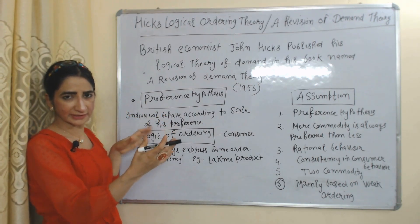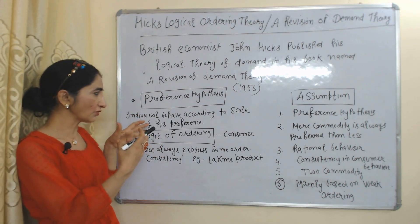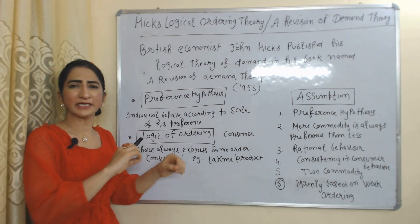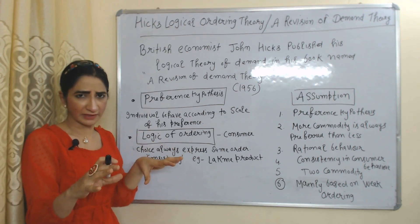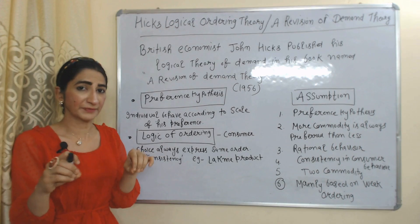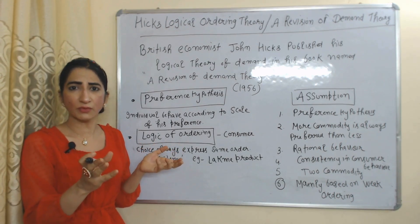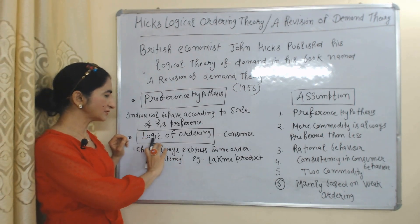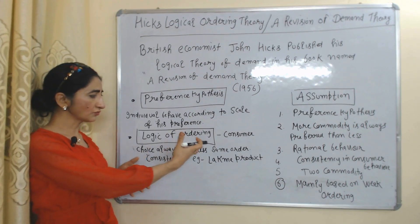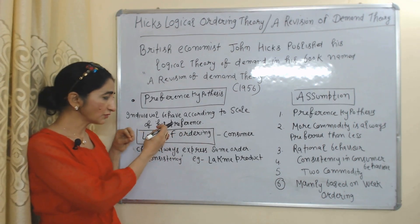This theory is based on preference hypothesis. Preference hypothesis mainly shows the scale of individual preferences. For example, there are so many mobiles available, but I always choose Samsung mobile — this shows my preference towards Samsung mobile. Next, this theory is based on logic of ordering, meaning the consumer always expresses the same order, or we can say consumer behavior always shows consistency.